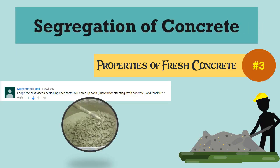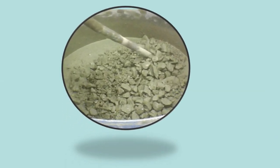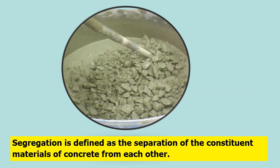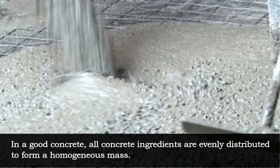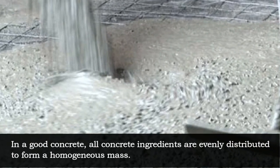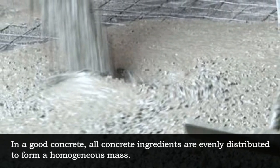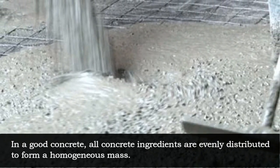Segregation of Concrete. Segregation is defined as the separation of the constituent materials of concrete from each other. In a good concrete, all concrete ingredients are evenly distributed to form a homogeneous mass.